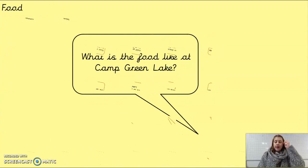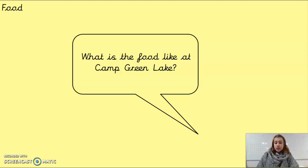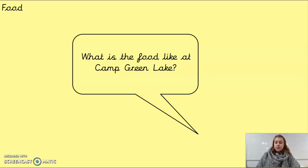The final thing is the food. Obviously they get given food — they get fed at Camp Green Lake. This is one where you can really go all out. Have a think about the foods you might get while camping. You could say that they roast marshmallows on a fire — loads of different things. Pause the video, as this is probably the easiest one to mind map and come up with some different ideas.